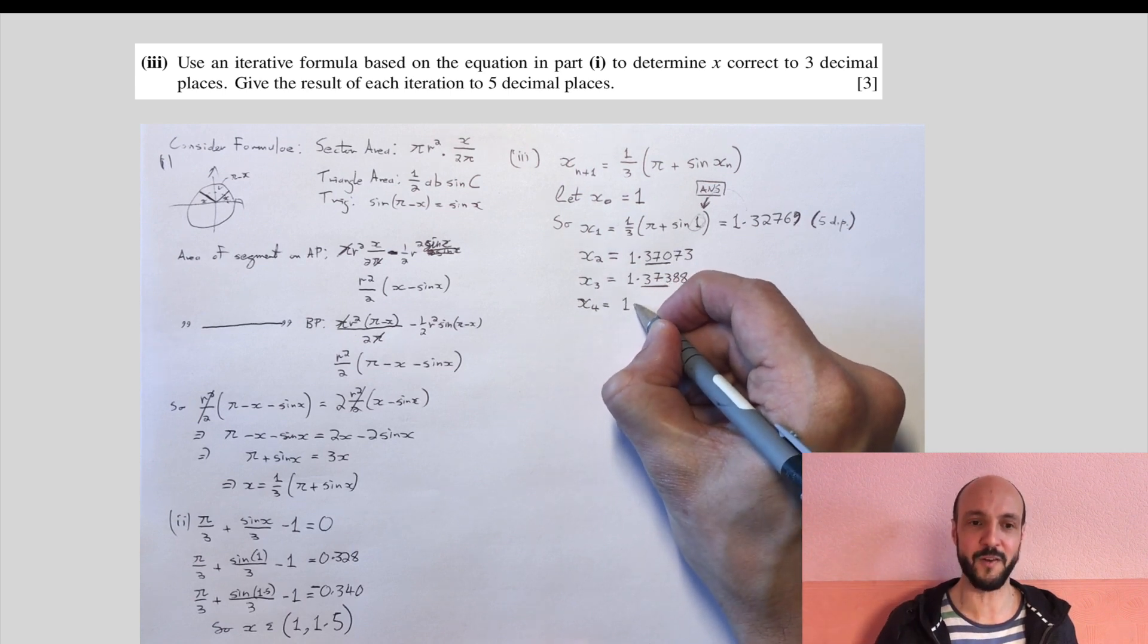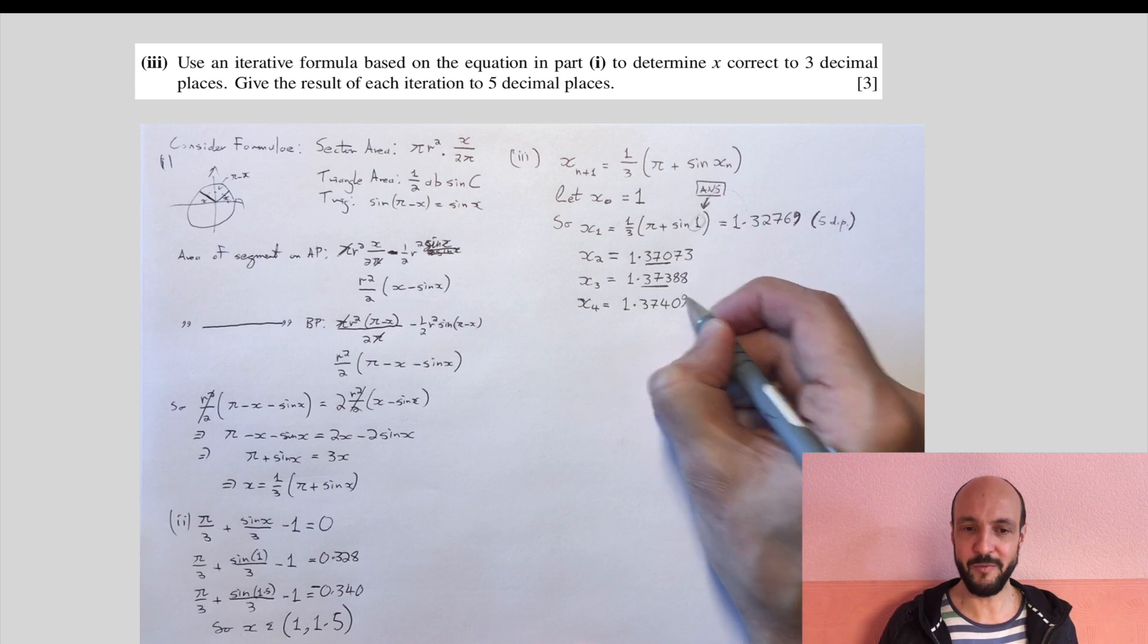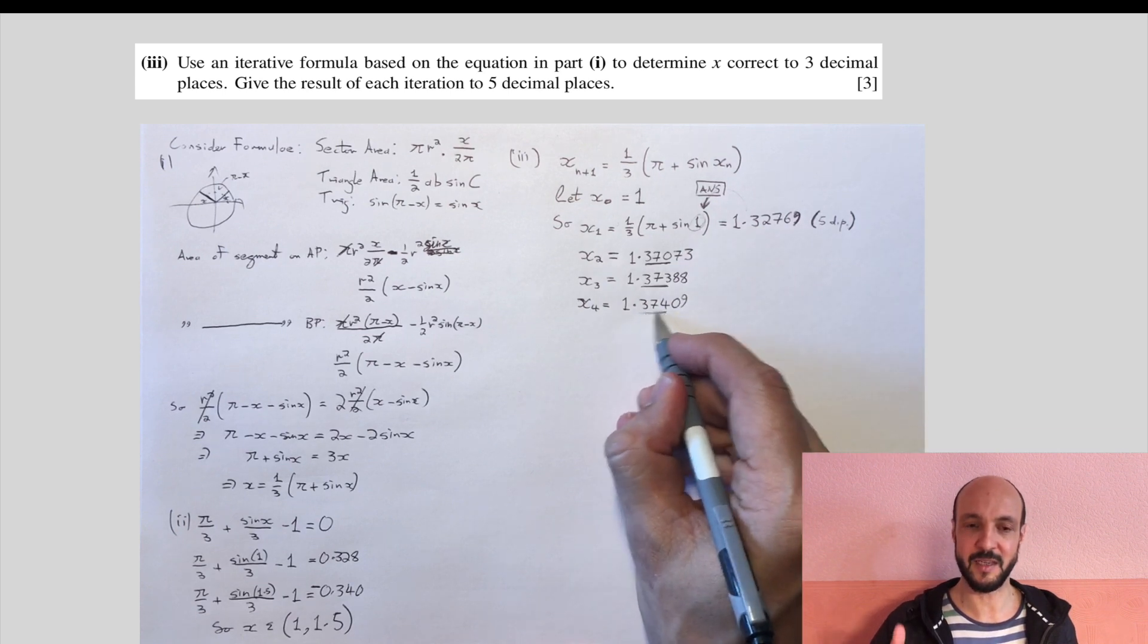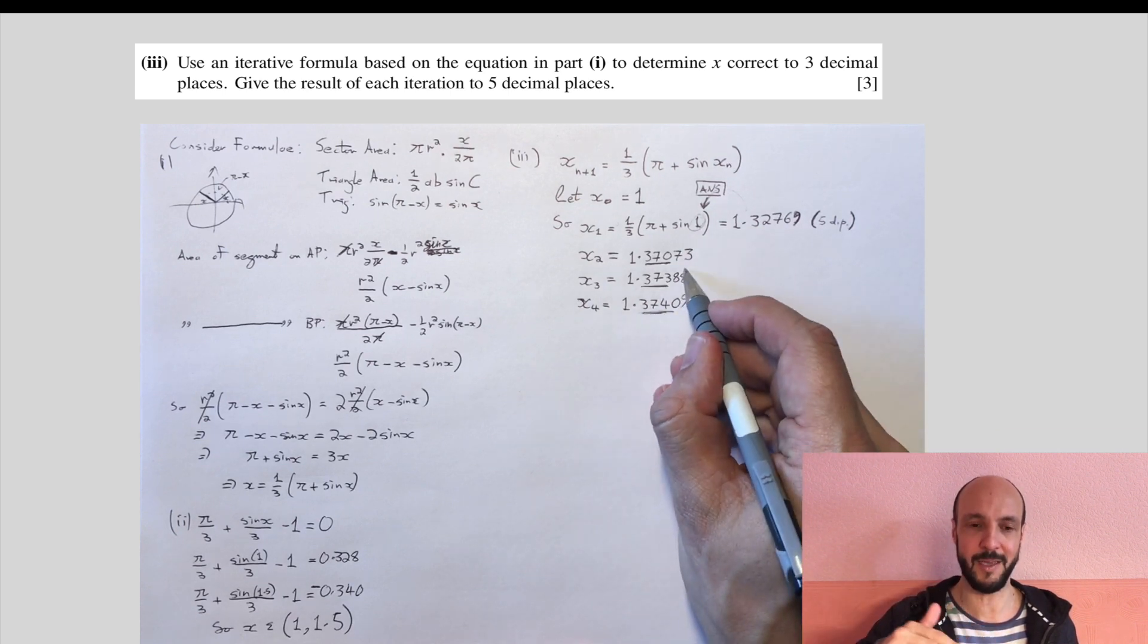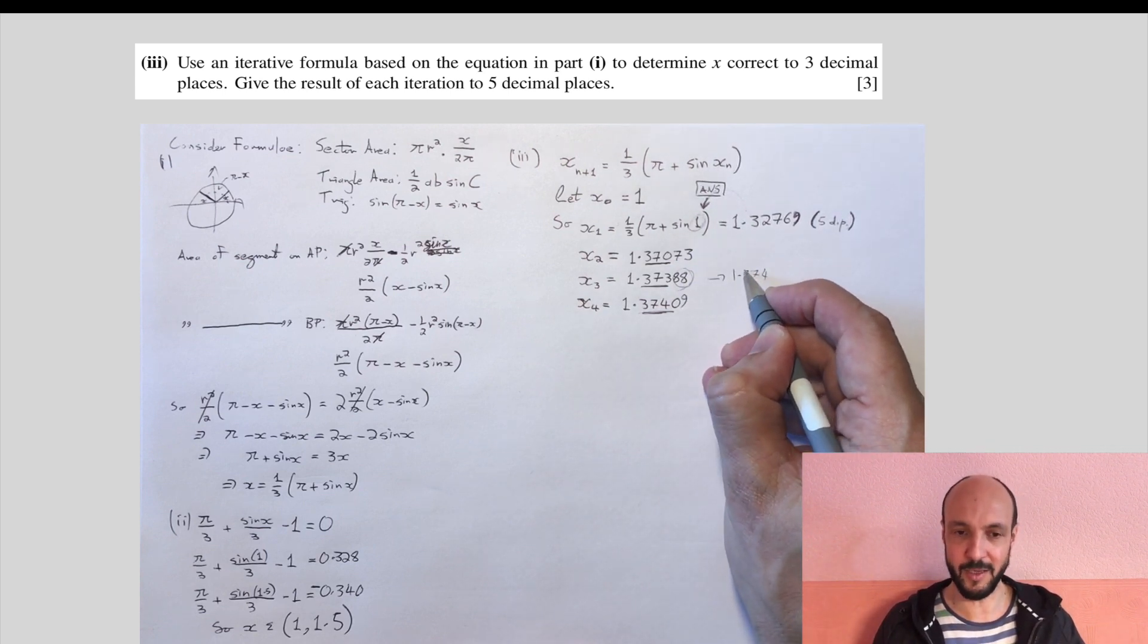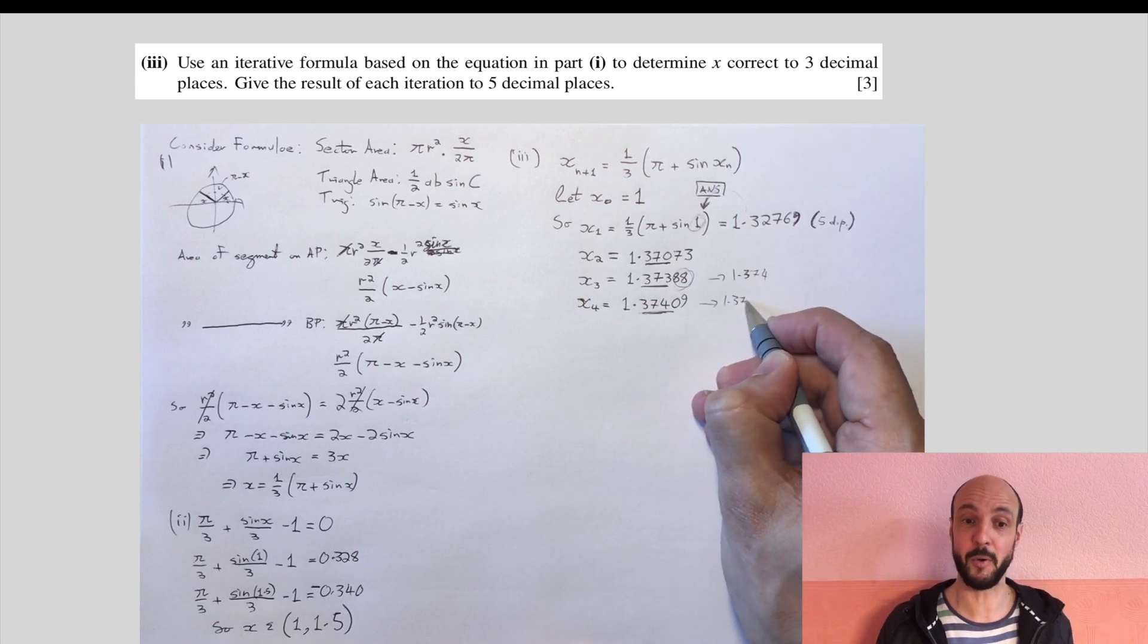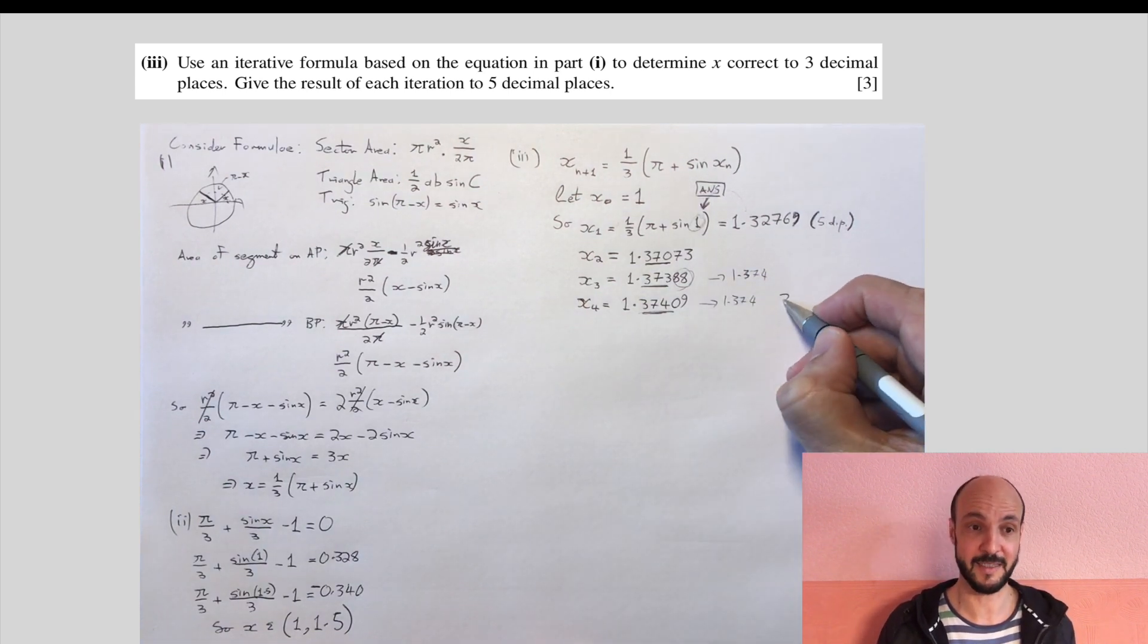So we need to go one further. We get 1.37409. Now we've gone far enough, because if it's between 1.37388 and 1.37409, it can't be 1.373, it can't be 1.375, so the only possible answer is 1.374, which is the correct answer.